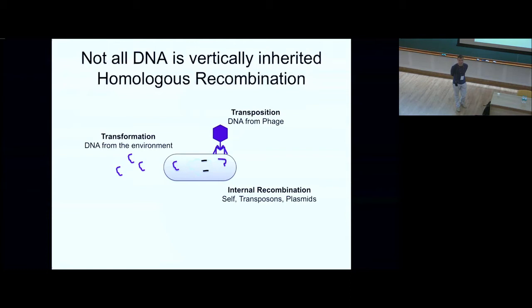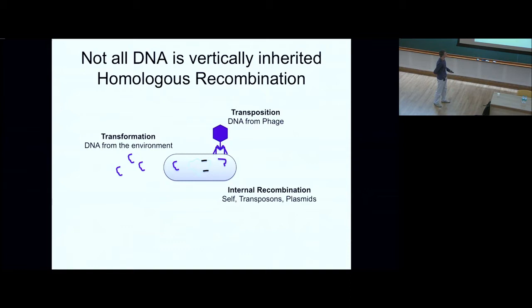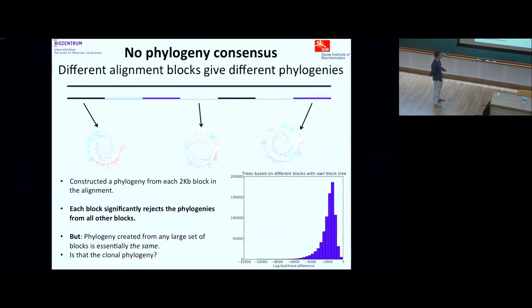However, it's been known for quite a long time that not all DNA is vertically inherited. There are processes that allow DNA from one cell to make it into the genome of another cell. Some bacteria can take up DNA from their environment; most bacteria are infected by phages, which may carry host DNA and inject it into a new host. Through homologous recombination, a genome can swap its copy for a piece of DNA coming from another E. coli.